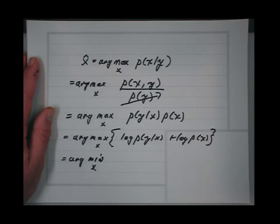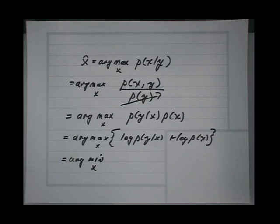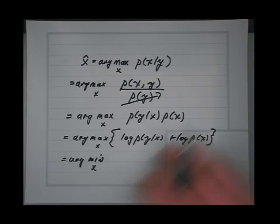I prefer to do minimization because I think it's easier to think about. The reason is that gravity pulls things down — when we plot things, you have some sort of surface and a ball that goes downhill.